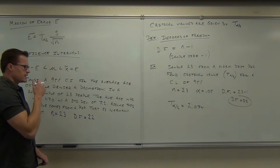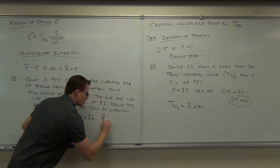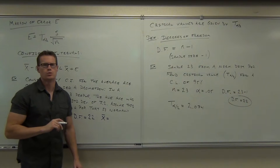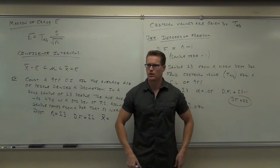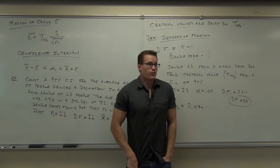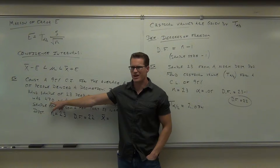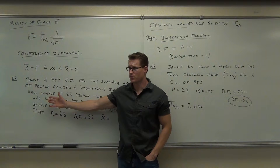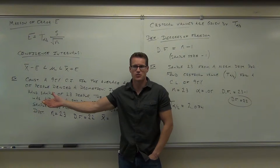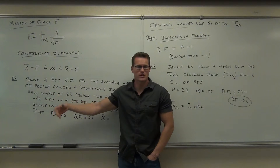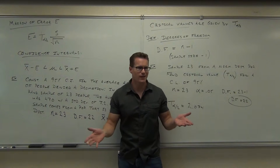Do I have an X-bar or do I have a mu? Is this average age from a sample or the population? It's from a sample. I'm not going to tell you the population mean — that's what we're trying to estimate. Why would I tell you the mean age is 47 for the population? You wouldn't even have to do this. So the sample mean is 47.